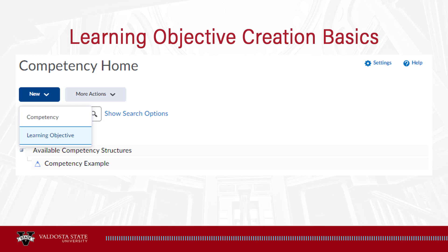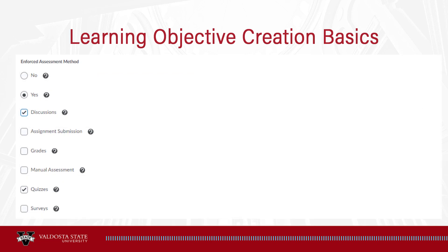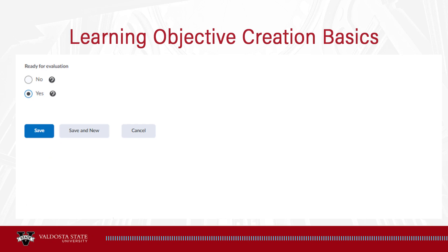Next, you'll create a learning objective, so select New and select Learning Objective. On the new learning objective page, enter the name of the learning objective. You may add a description and additional identifiers if needed. If you are using assessment as criteria for demonstrating students meet an objective, select Yes and select the types of assessment you plan to use. You may select more than one method, but you will not be able to change it after creating the objective. Select if the objective is ready for evaluation — you must select Yes to be able to evaluate the objective. Once the settings are complete, click the Save button. Remember, once you save, you will not be able to change the enforced evaluation method.